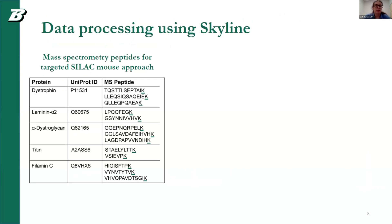For the proteins we looked at, there was dystrophin, laminin alpha-2, and alpha-dystroglycan, which are core DAPC proteins; titin, which is a protein to mark muscle degeneration; and filamin C as more of a control that is not as related to muscle degradation.